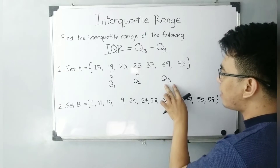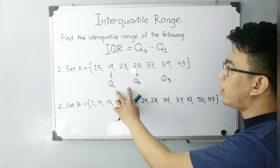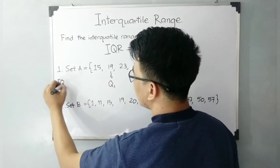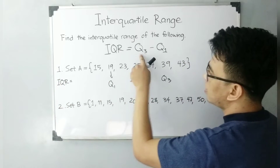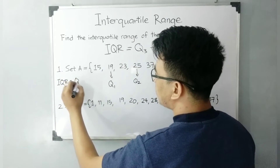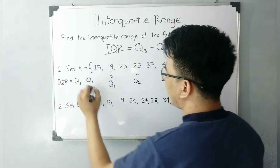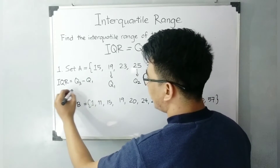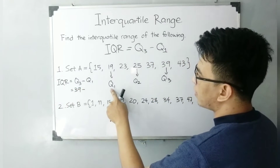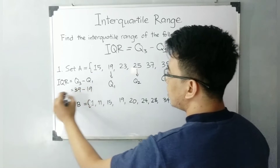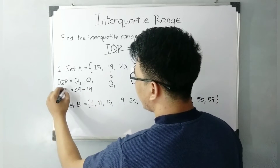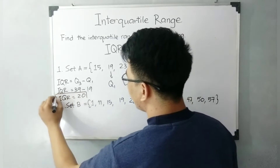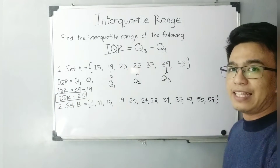Since we already obtained the value of quartile number three and quartile number one, we are ready to use this formula. IQR or interquartile range is equal to the upper quartile minus the lower quartile. Substituting: you have your upper quartile which is 39, so 39 minus your lower quartile which is 19. Your interquartile range is equal to 20. This is the interquartile range of the first given data set.